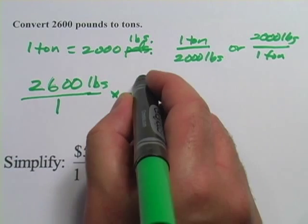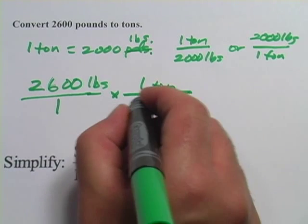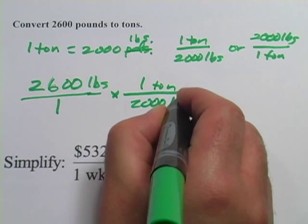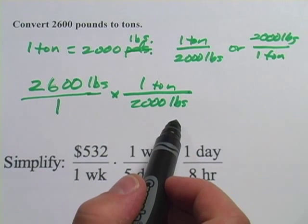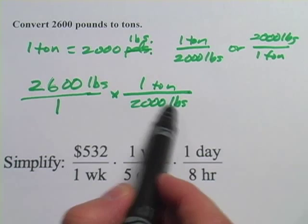So that's this one. That would be one ton on the top, 2,000 pounds on the bottom. The reason we do that is because we want the original units to cancel.